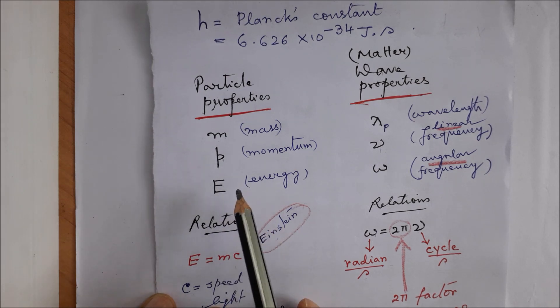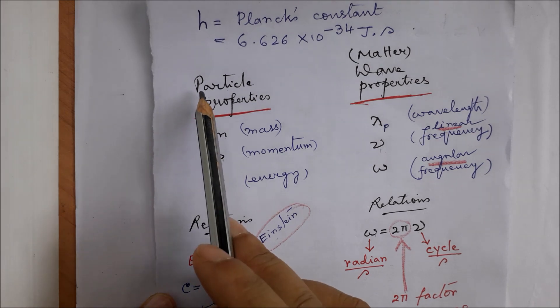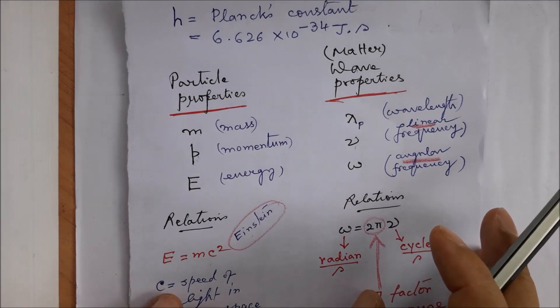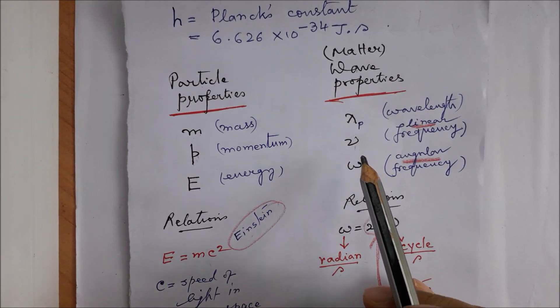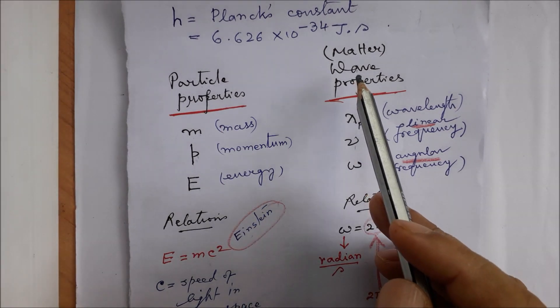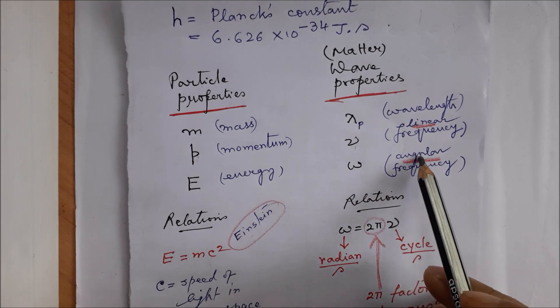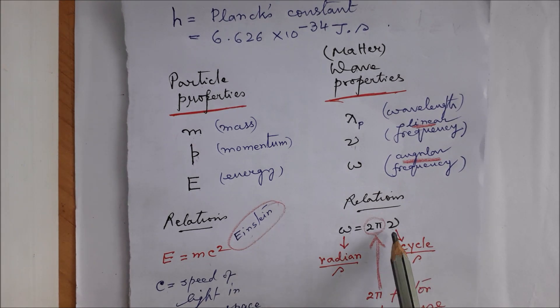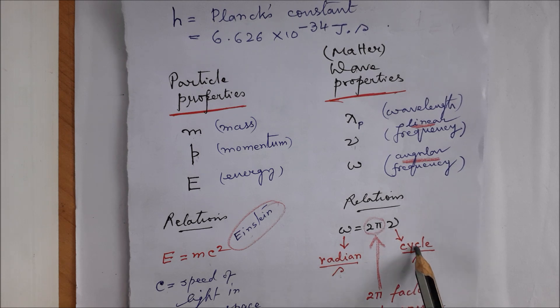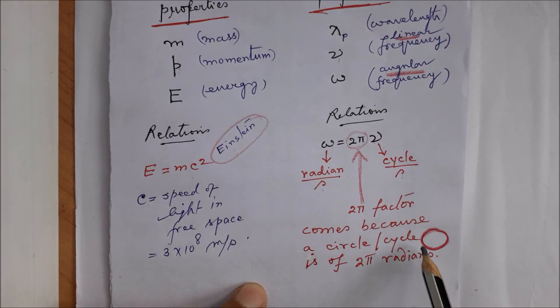Let us list down particle properties. By particle properties we mean mass, momentum, energy. So a quantity which is endowed with these properties, a particle, a system which has a mass, a momentum, energy, is definitely a particle and not something else such as a wave. On the other hand, if a system has a wavelength, has a frequency, then it is definitely not a particle but a wave. These are classical ideas. And here ν represents linear frequency and ω represents angular frequency.